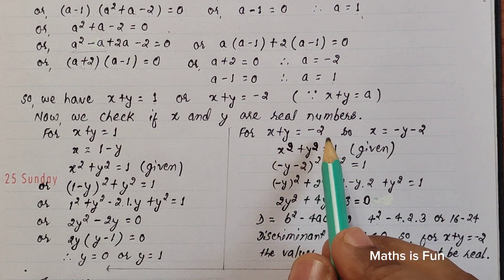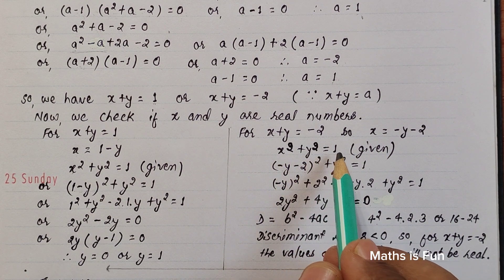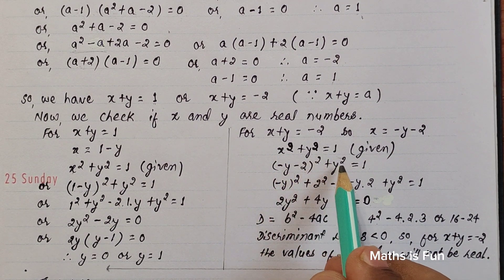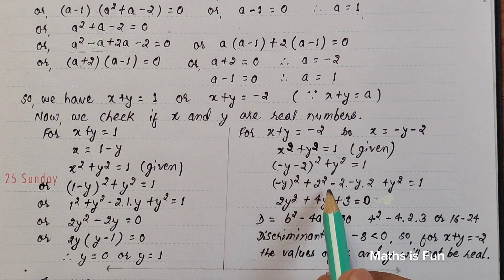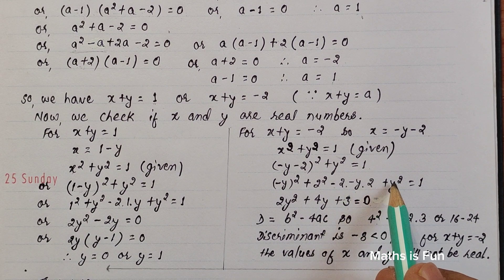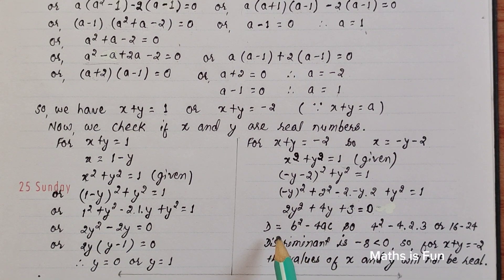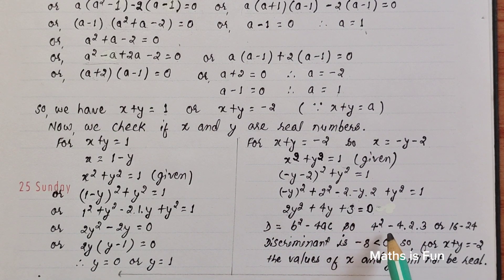Now let's check x + y = -2. We write x = -y - 2 and substitute into x² + y² = 1: (-y - 2)² + y² = 1. Expanding: y² + 4y + 4 + y² = 1, which simplifies to 2y² + 4y + 3 = 0. We use the discriminant to test if y is real: discriminant = b² - 4ac = 4² - 4(2)(3) = 16 - 24 = -8.